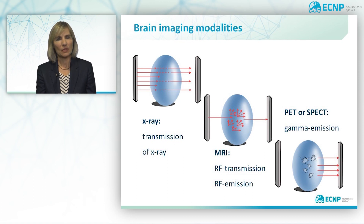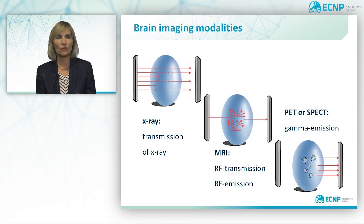Positron emission tomography, or PET, builds on the measurements of decaying positron-emitting nuclides. This is done by having detectors placed in a ring around the head of the person to register the decay both spatially and temporally.